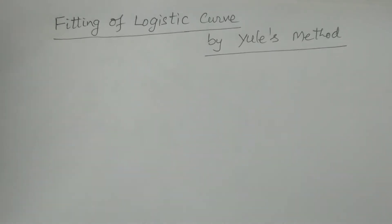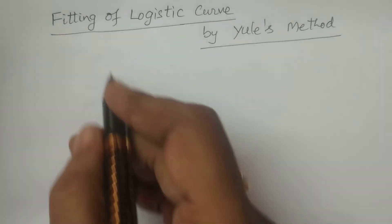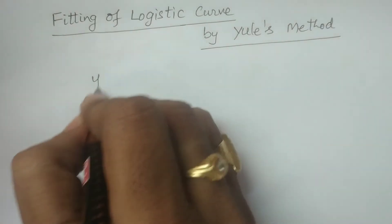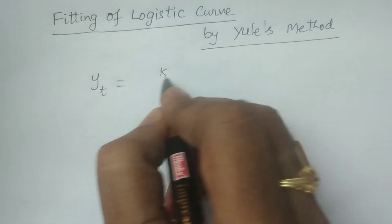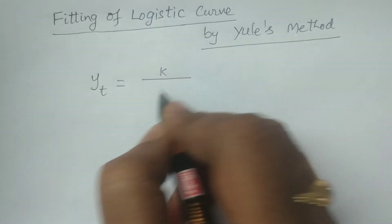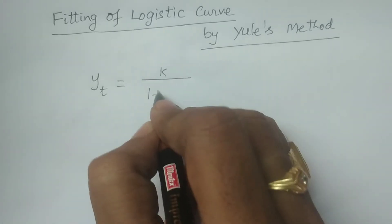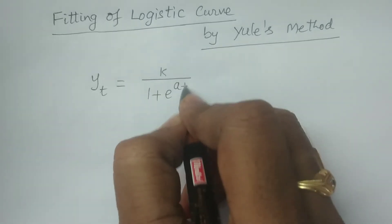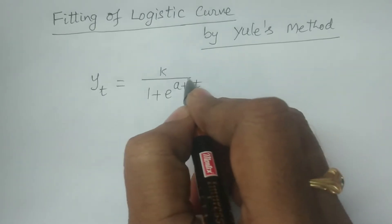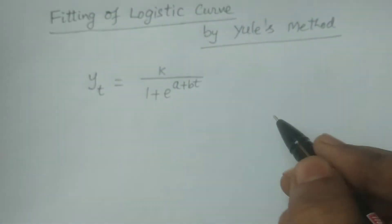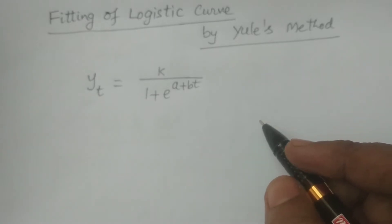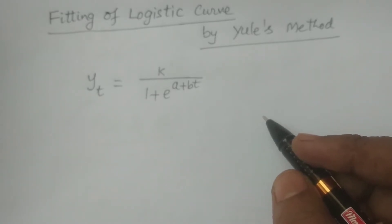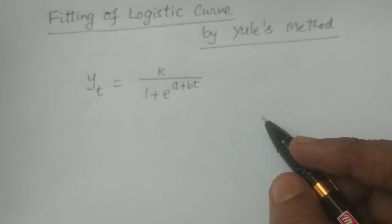What is a logistic curve? First of all, I specify Y_t. Y_t is equal to k divided by 1 plus e to the power (a + bt). This is a logistic curve. What is the method of Yule? How can we fit the logistic curve using Yule's method?